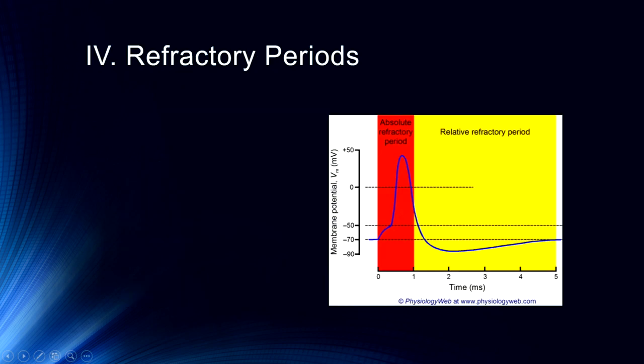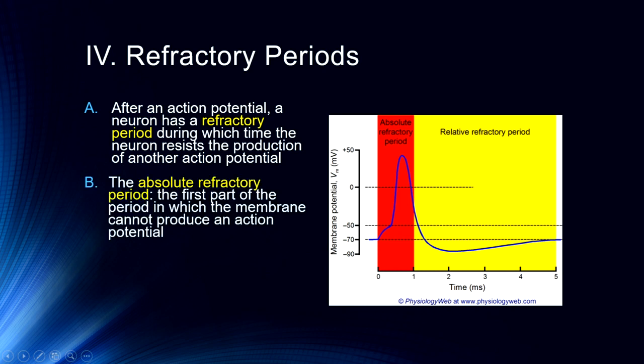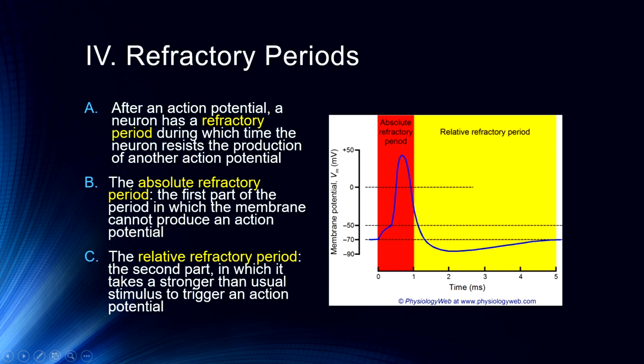After an action potential, a neuron enters a refractory period — a time when it will resist or cannot produce another action potential. The absolute refractory period lasts about a millisecond, during which the neuron cannot fire at all because it must restore the ion balance. The relative refractory period follows immediately after, during which it takes a stronger-than-usual stimulus to trigger an action potential. After that millisecond, you can trigger another action potential, but it requires a greater level of excitation.